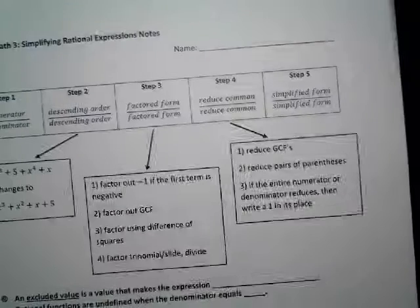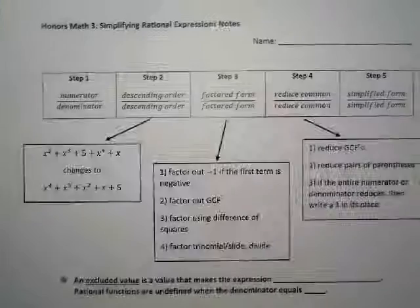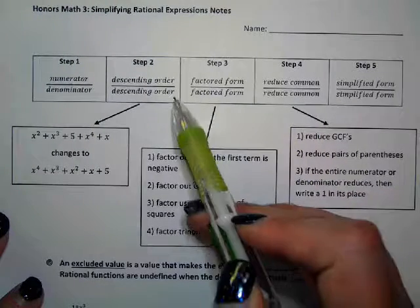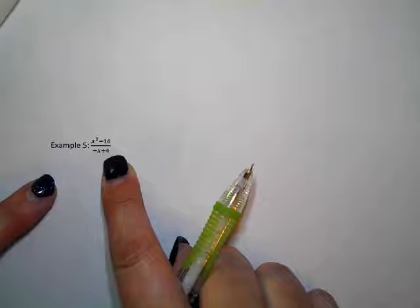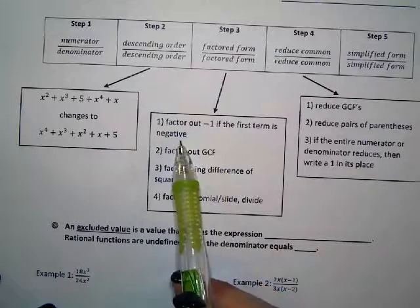Let's move on to example five. The very first thing we want is to write the problem as numerator over denominator, which is how number five is currently written. The second thing is to write each of the terms in descending order, which is also how example five is currently written. Then we want to write example five in factored form. So if you have a negative in the front, you want to factor out the negative one — that is something we have to do in example five.